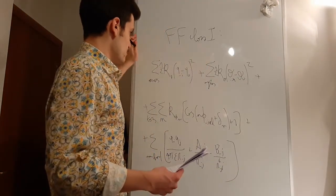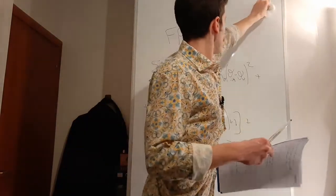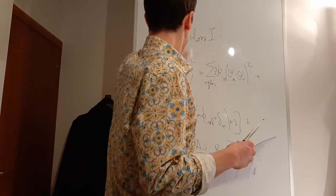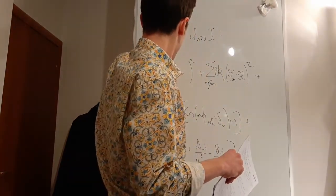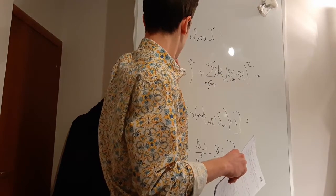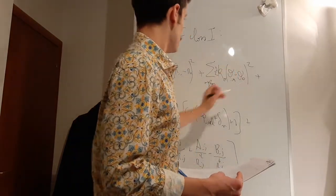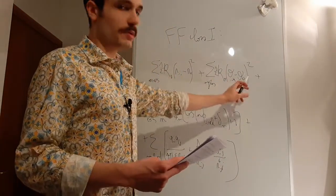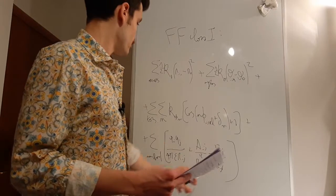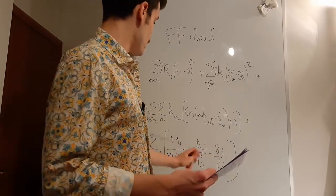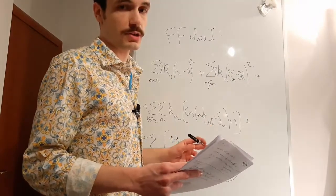I forgot to put the one-half prefactors before, so I'll add them here. More commonly, you'll find it written with R_ij minus R0, all squared. So: harmonic bonds, harmonic bending, that torsional part based on cosines, and then the non-bonded part. Sometimes we will also have a special interaction for 1,4 non-bonded interactions.